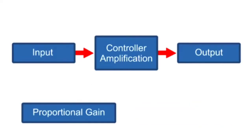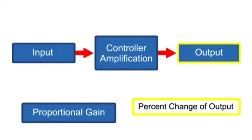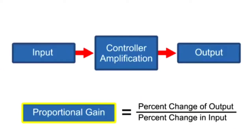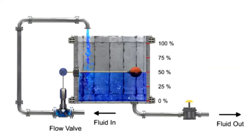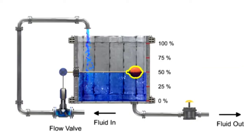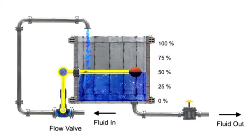The ratio of the change in output to the change in input is defined as proportional gain. To illustrate the concept of gain, a common process of regulating the level of fluid in a tank with a float attached to a control valve is used.